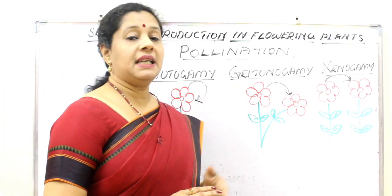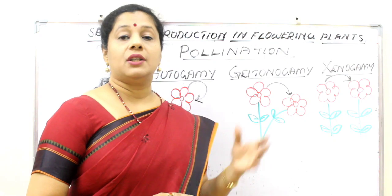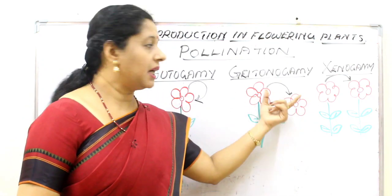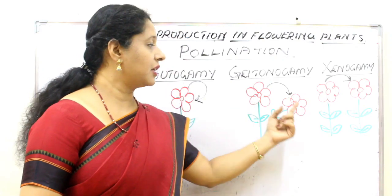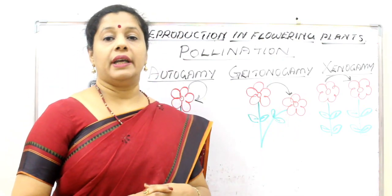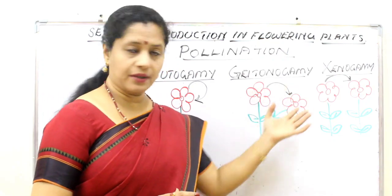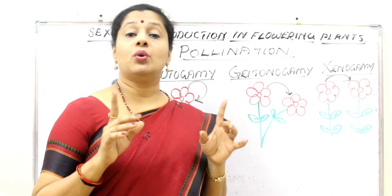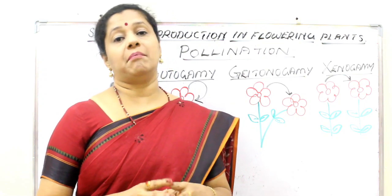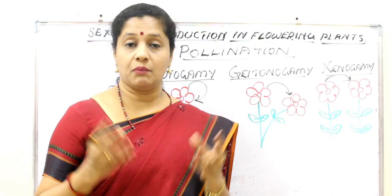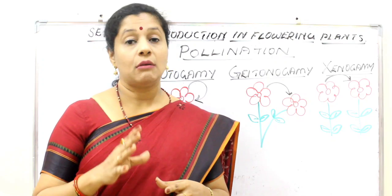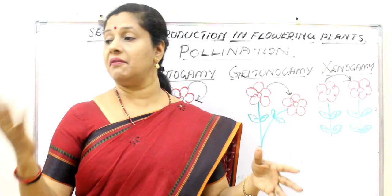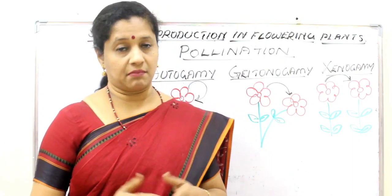Geitonogamy is a condition where pollen transfer occurs between two flowers of the same plant — from one flower to another. If the plant has bisexual flowers, this is possible. If it has unisexual flowers, both must be on the same plant — such plants are called monoecious plants. If it is dioecious — where the male and female plants are separate — geitonogamy is not possible.